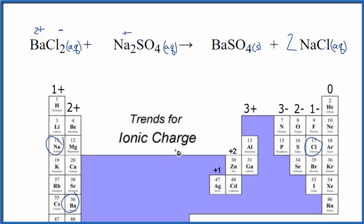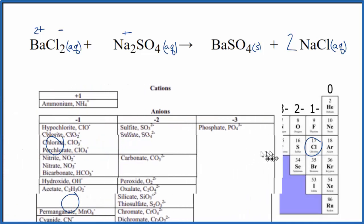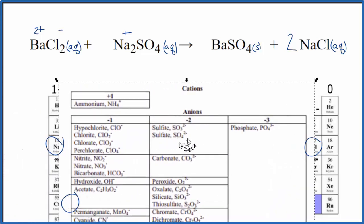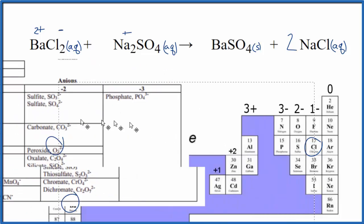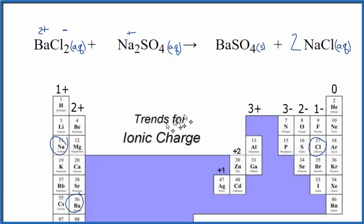Sulfate, that's not on the periodic table. You can use a table of common polyatomic ions to look that up, and you can see the sulfate right here, that's two minus. It's also a good one to remember.